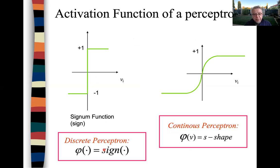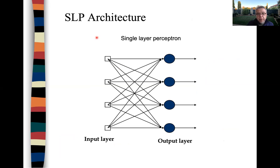The sign function has two possible values: plus one and minus one. The continuous perceptron has this S-shaped function, which in this case also takes plus one and minus one. A single layer perceptron has an input layer and an output layer.